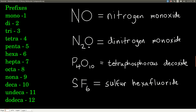This compound, N2O, has two nitrogens. So we say dinitrogen monoxide. Mono oxide is acceptable, but usually when there are two vowels together, we drop one of them. This compound here — phosphorus and oxygen are both non-metals. There are four phosphorus and ten oxygens. So we say tetraphosphorus decaoxide. We dropped the A because we had two vowels next to each other.